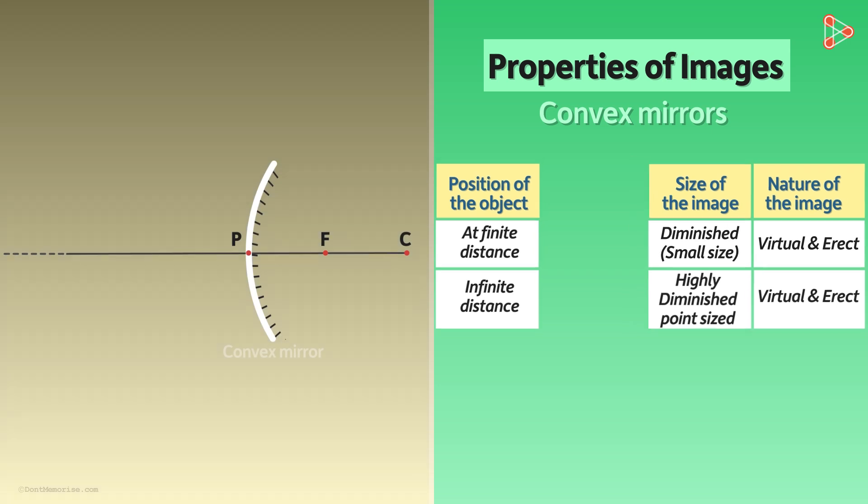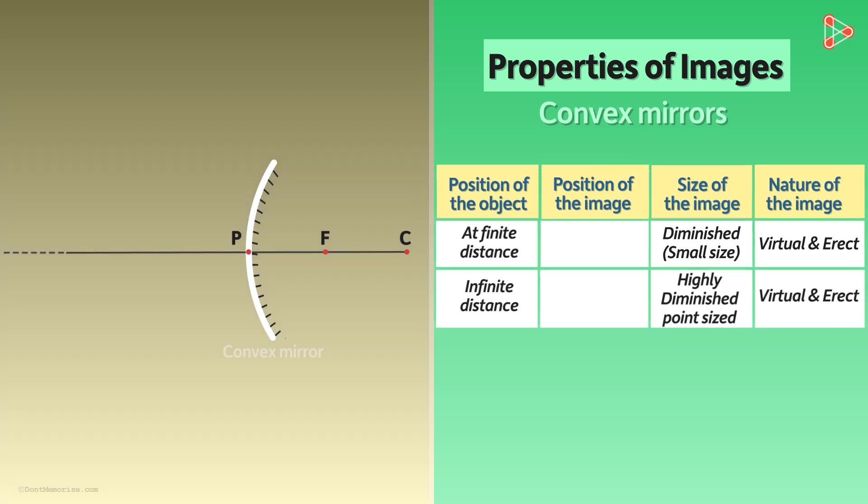We will now represent the image formed by a convex mirror using ray diagrams. Let's try to draw a ray diagram for this case first. This is when the object is at infinity. Our object will be the usual arrow and suppose it is at infinity. Now if you remember, I told you that the rays of light coming from the object at infinity are considered to be parallel to each other. And we know that two rays are sufficient to draw a ray diagram. So we will take any two parallel rays striking the mirror.